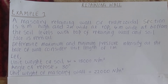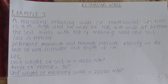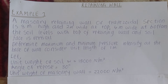In the previous tutorial I taught you on retaining walls — that was a brief introduction on what a retaining wall is, the types of retaining walls, the theories we used: Rankine's theory and Coulomb's theory, and also some terms like active pressure, passive pressure, and the angle of repose. If you haven't watched that video, you'll find a link in the description box below.